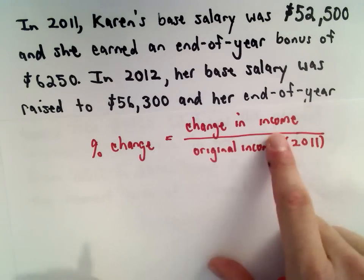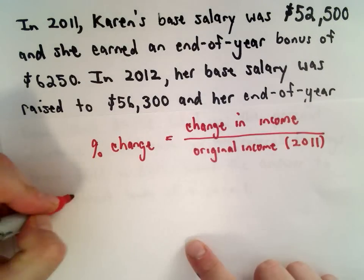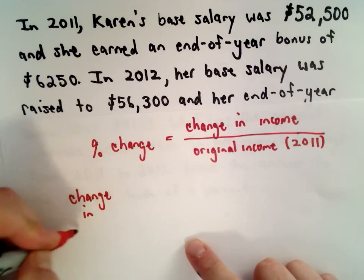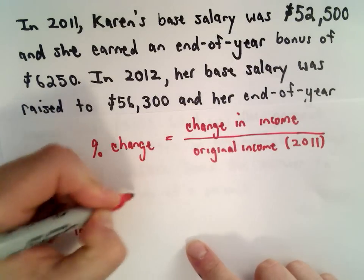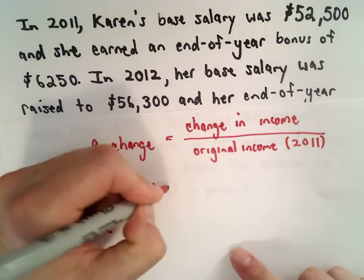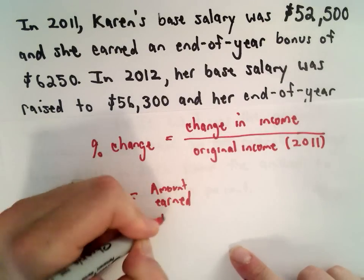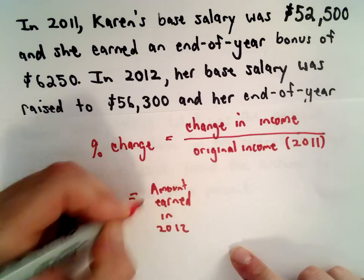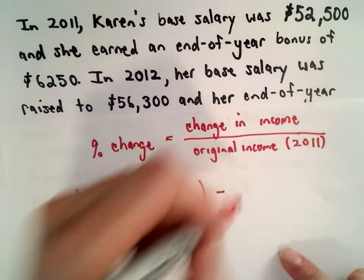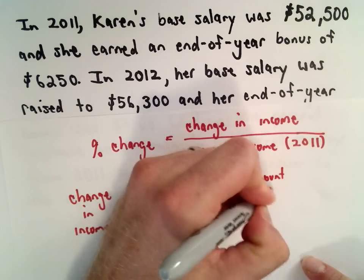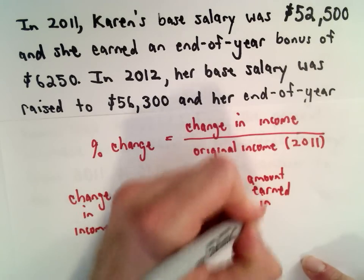Alright, so to figure out the change in income, the change in her income, that's going to equal the amount earned in 2012, and we'll subtract from that the amount earned in 2011.